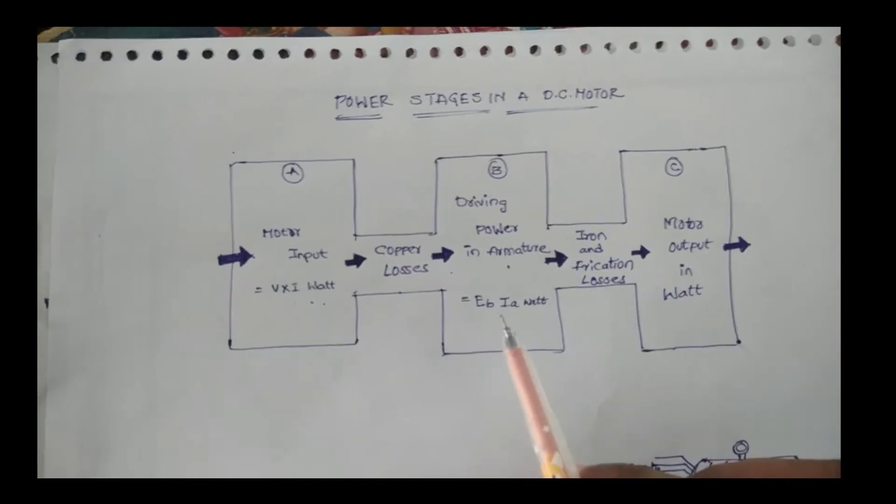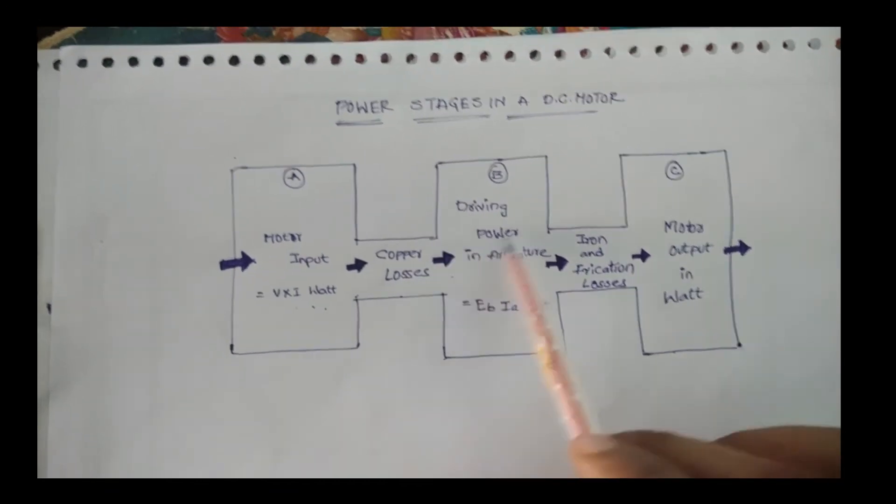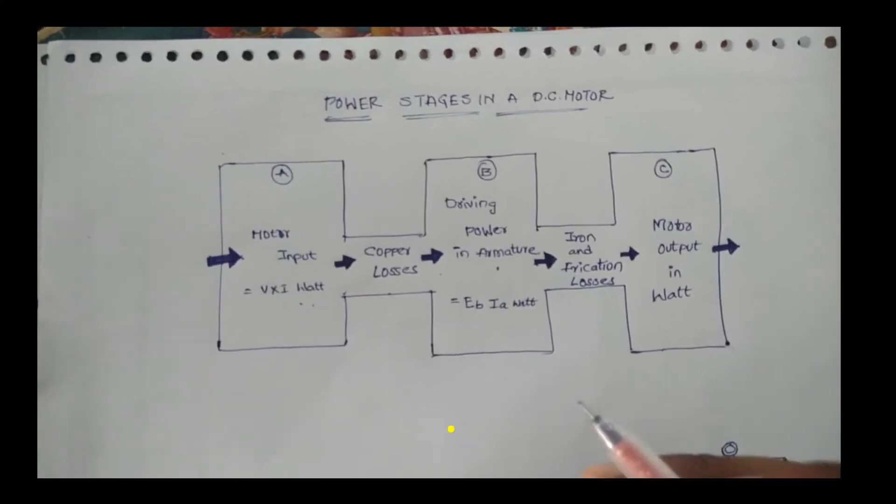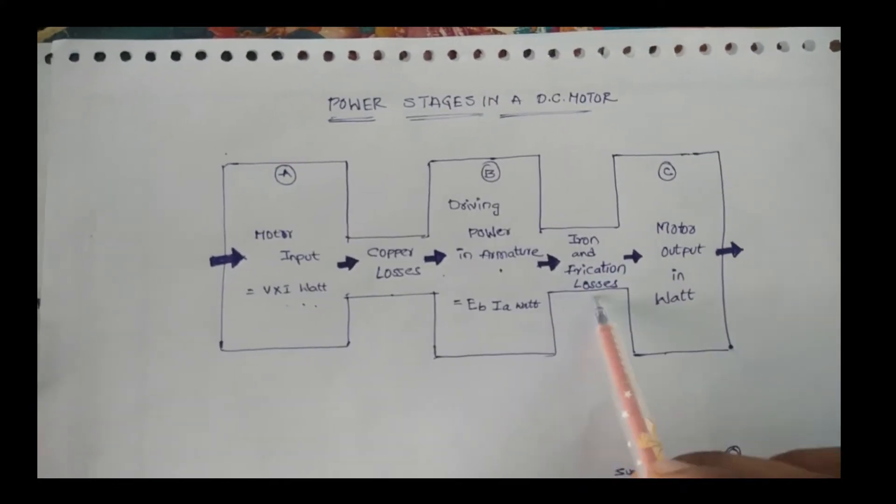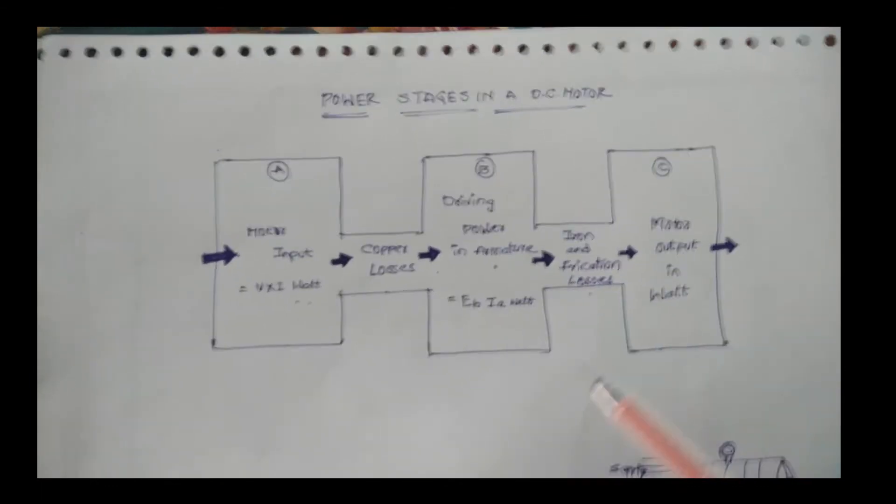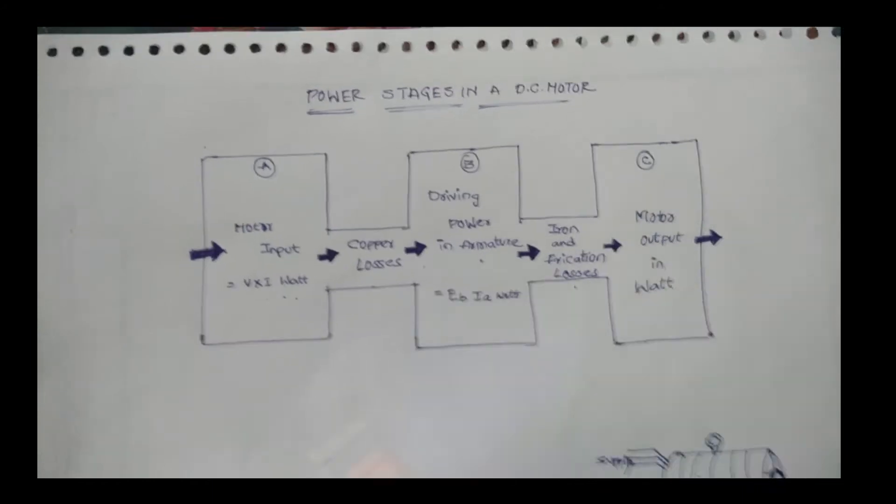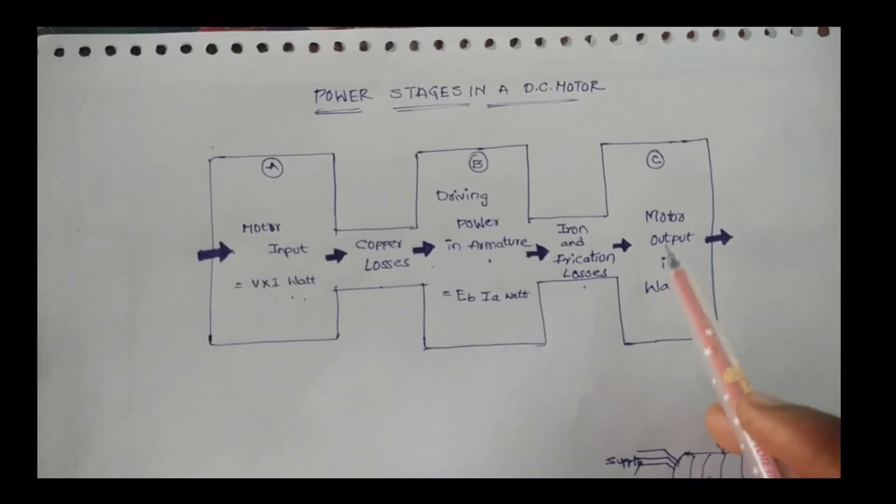This is the driving power in the armature, EA times IA. By rotating the armature, it produces iron and friction losses. Finally, we get the motor output as mechanical energy.